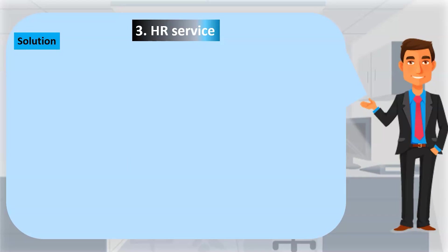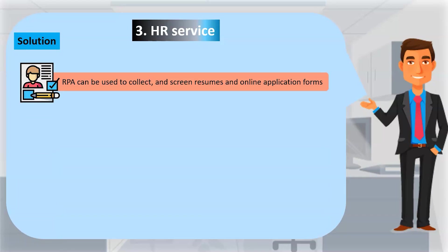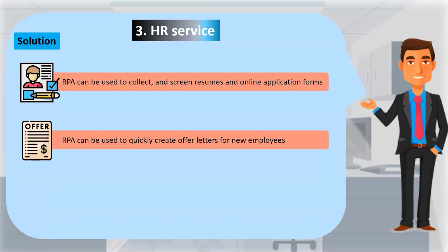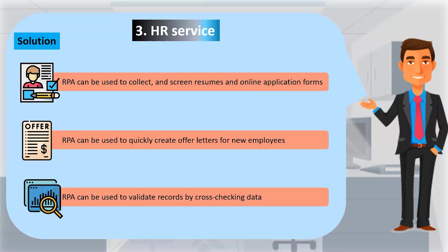The possible solution is that RPA can be used to collect and screen resumes and online application forms, conduct thorough background checks, and compare the information to all relevant job requisitions, allowing the best candidates to be shortlisted. RPA can quickly create offer letters for new employees that are both personalized and accurate. It can also validate records by cross-checking data such as absentee reports against time logged in the corporate network and alerting when information is missing or inconsistent.